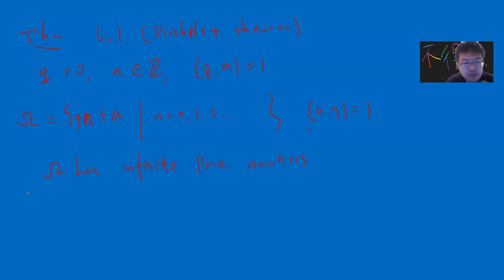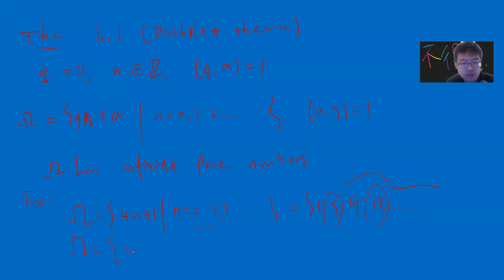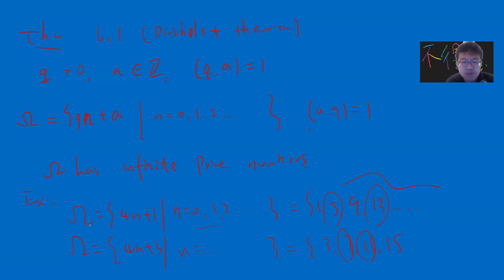This is very non-trivial. For example, if omega is {4n + 1} — giving 1, 5, 9, 13, ... — there are infinitely many primes, for instance 5 and 13. You can also consider {4n + 3}, giving 3, 7, 11, 15, ... where 7 and 11 are prime. While 4n+1 and 4n+3 might be provable by elementary methods, Dirichlet says that for any qn + a with gcd(a, q) = 1, there are infinitely many primes.